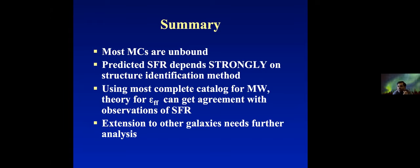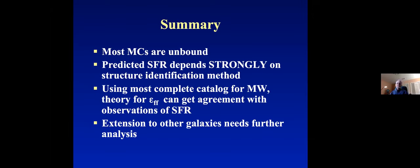Question from Roberto: how is the observational star formation rate measured in these plots? Answer: we're not doing it cloud by cloud — we're trying to match the star formation rate of the entire galaxy. For the Milky Way, that's based on the Chomiuk and Povich paper using many different techniques. For other galaxies, we take what Sun et al. used — probably based on H-alpha observations, though I don't know for sure what they used.